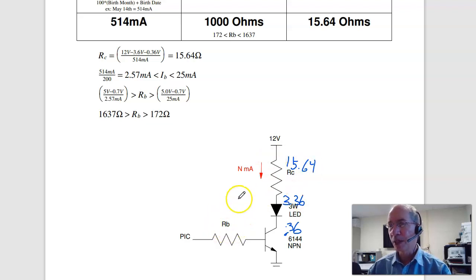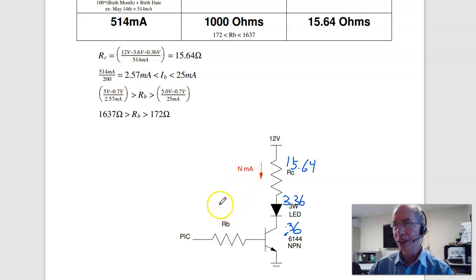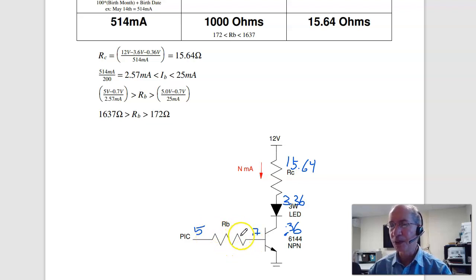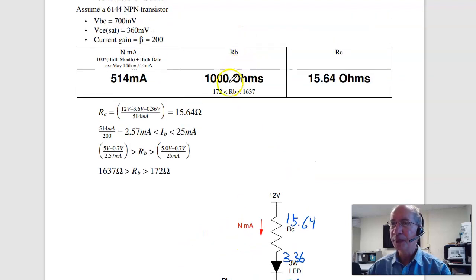To find RB: if the collector current is 514 milliamps and beta is 200, the base current must be at least 514 over 200, which is at least 2 milliamps. Pick something bigger than 2 — like 4 milliamps. With 5 volts and 0.7 volts across the base-emitter diode, that gives 4.3 volts across RB at 4 milliamps, so RB is about 1075 ohms. RB can actually be anything between 172 and 1637 ohms — there's a lot of room. RC is fixed; RC sets the current.